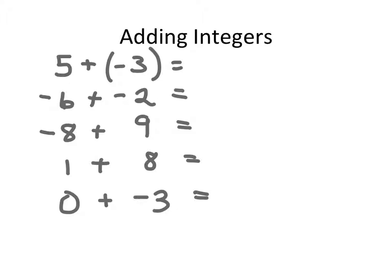In the first problem, I have positive 5 — that means I have 5 of something. I'm going to add to that positive 5 a negative 3, which means I'm taking 3 things away. So when I do that, I will end up with 2 positive things left. I can also think of this on a number line, starting on positive 5 and moving in the negative direction 3. I don't have enough to cross that center 0 line, so I end up at positive 2.